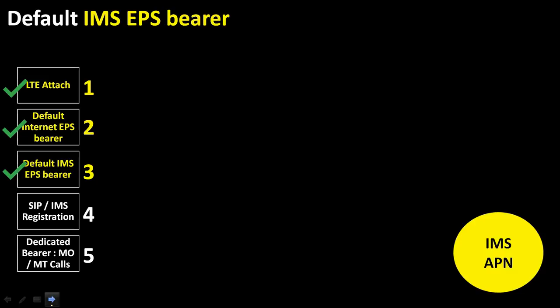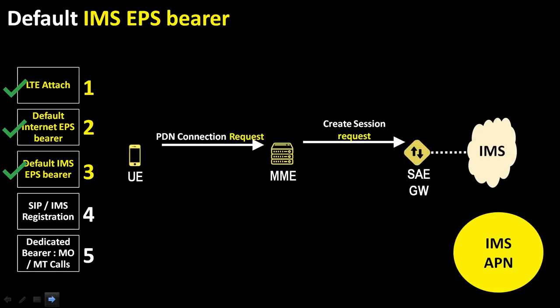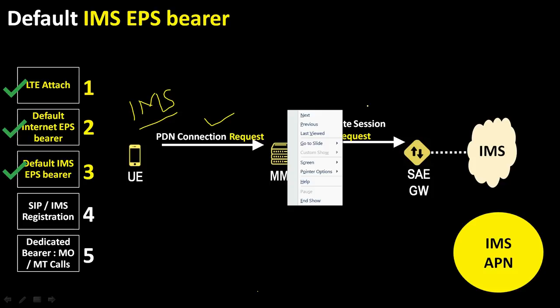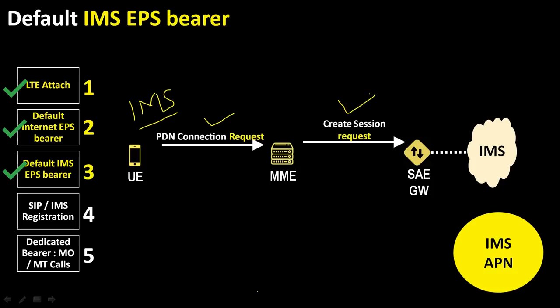Now let's cover IMS APN connectivity. The user is already connected to the internet. The UE attempts an additional PDN connection with the IMS APN using QCI 5 for prioritized access even in congested scenarios. The IMS APN is pre-configured in the UE, and its default EPS bearer has QCI value of 5 for SIP signaling. The UE sends the PDN connection request to the MME in the LTE network with IMS APN.